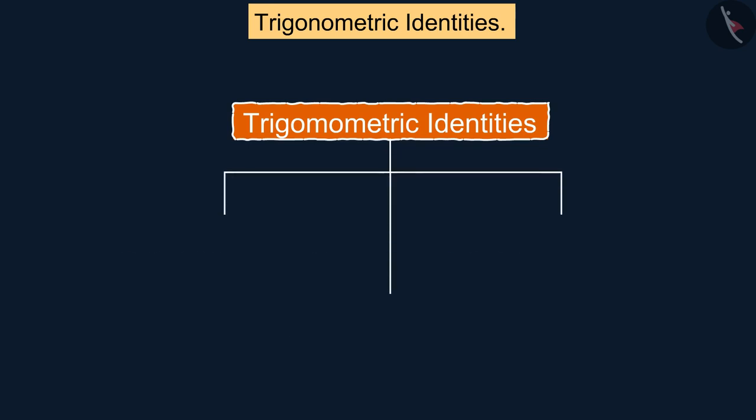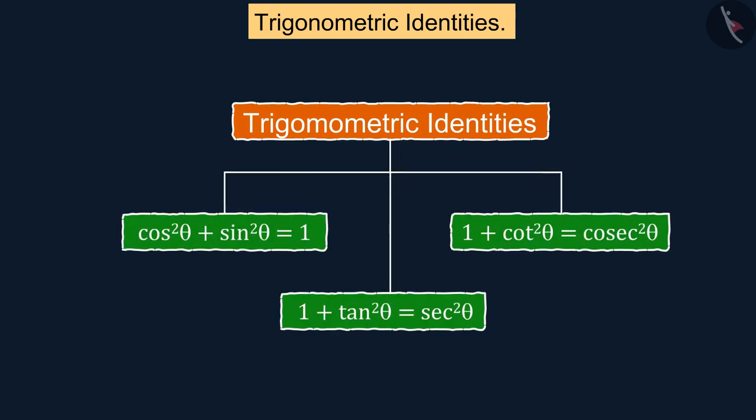Here, you are given three trigonometric identities. Let's discuss the first trigonometric identity of these.